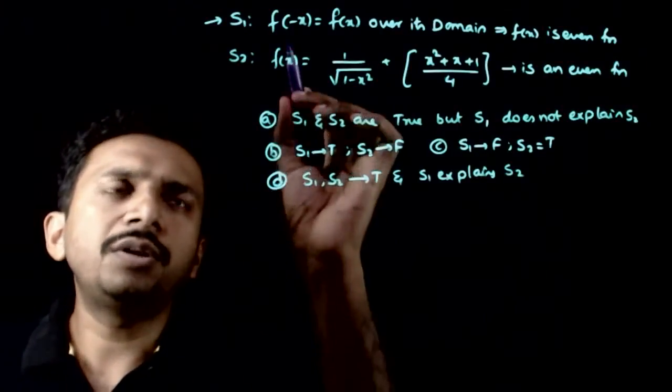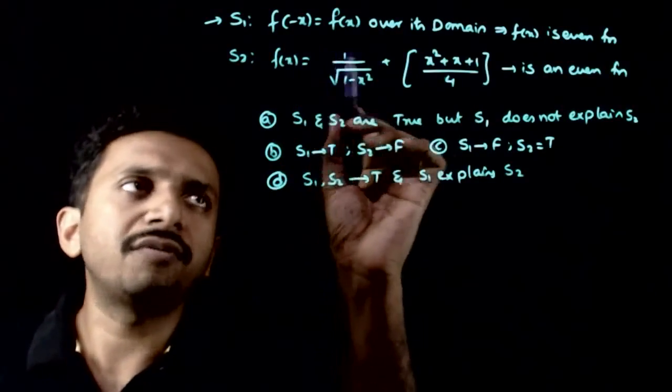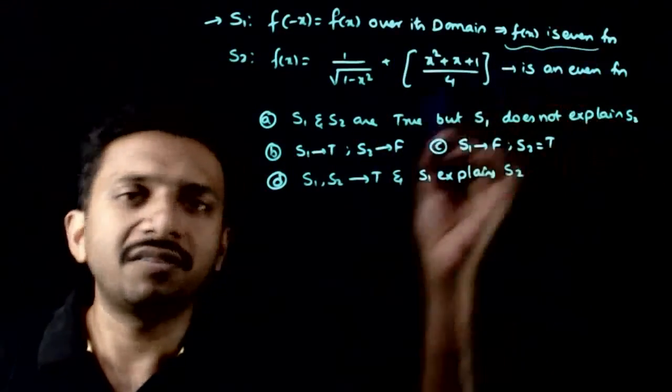Welcome students. This question gives two statements. Statement 1: f(-x) = f(x) over its domain implies f(x) is an even function.